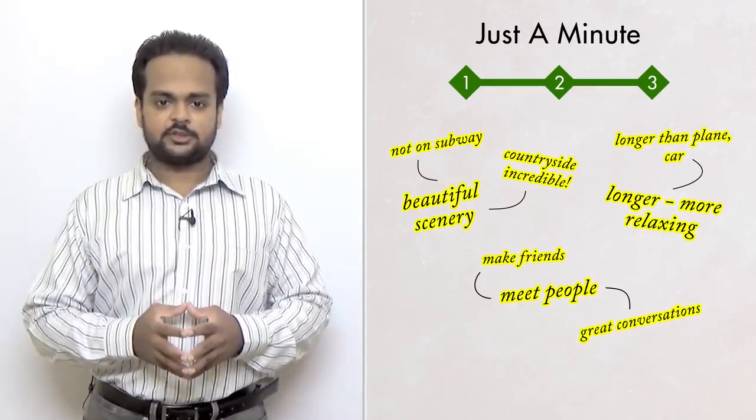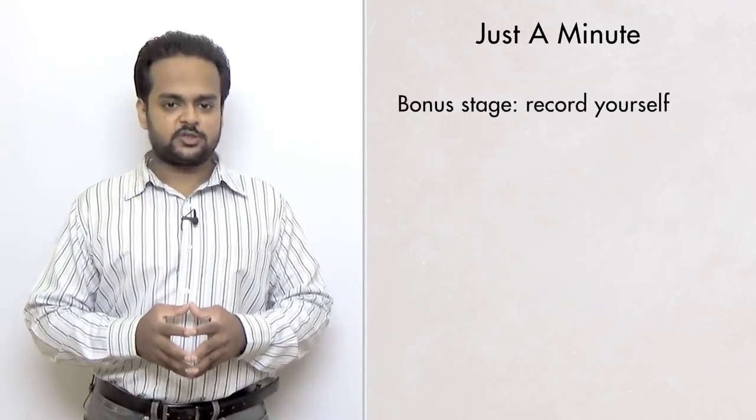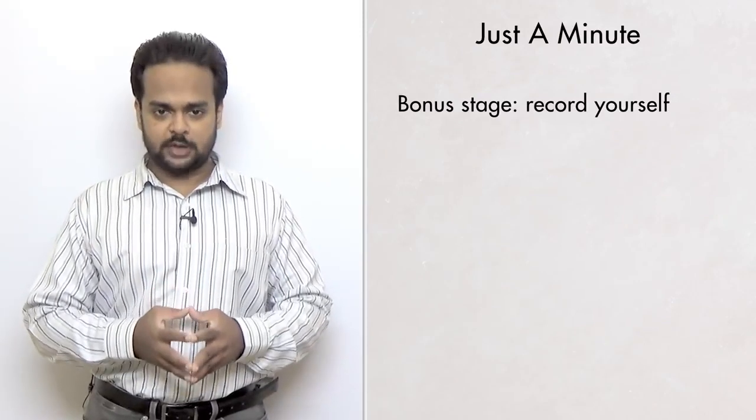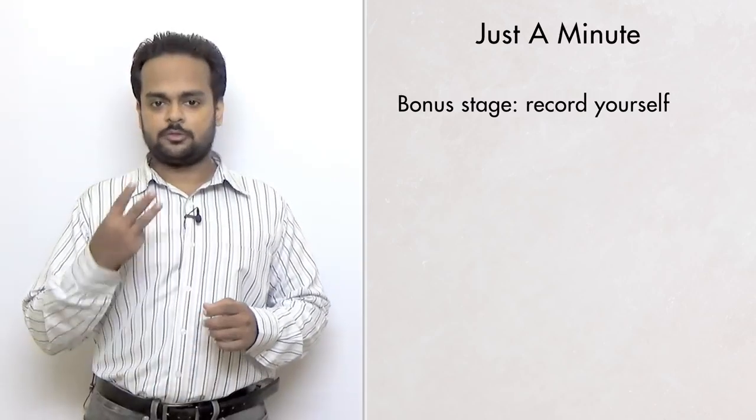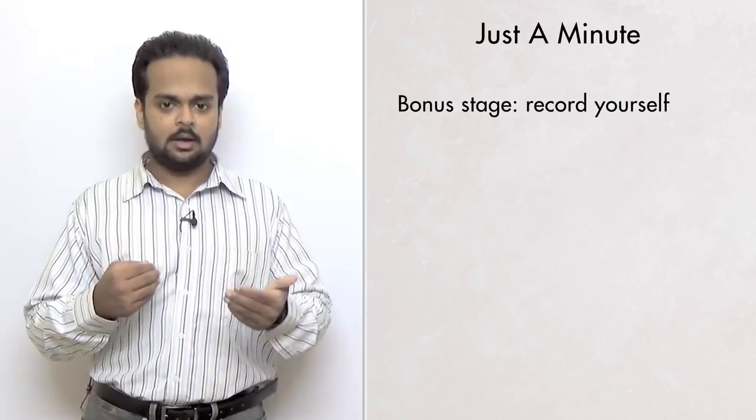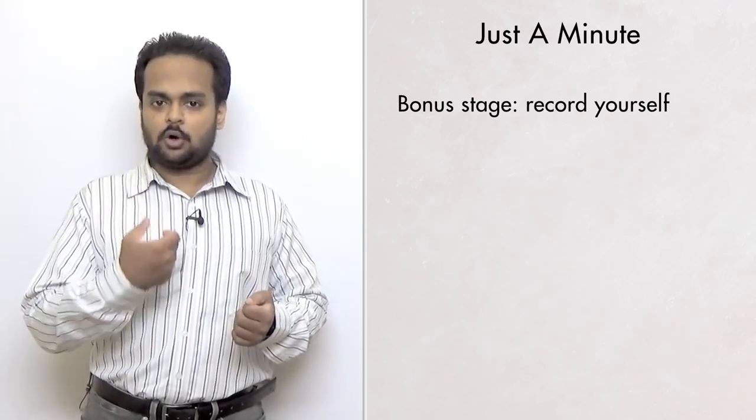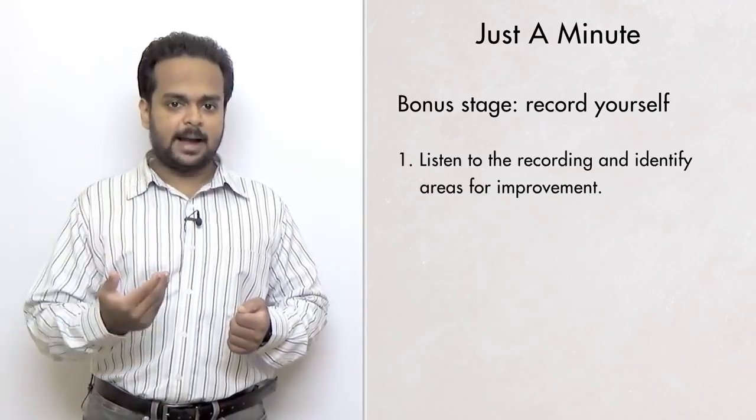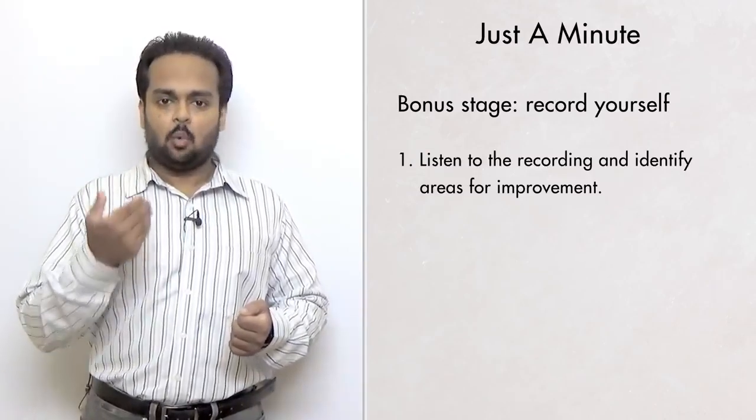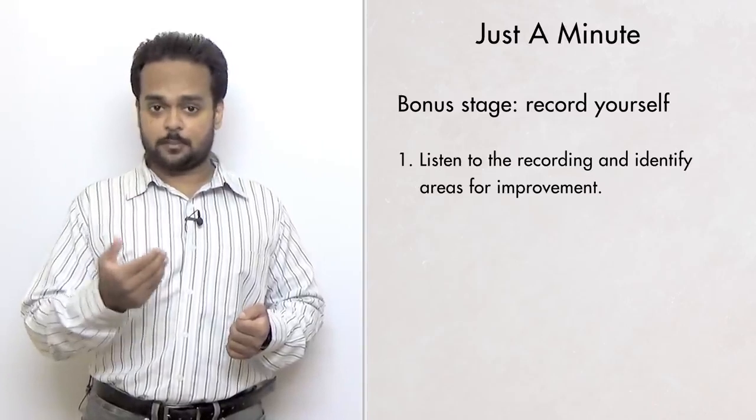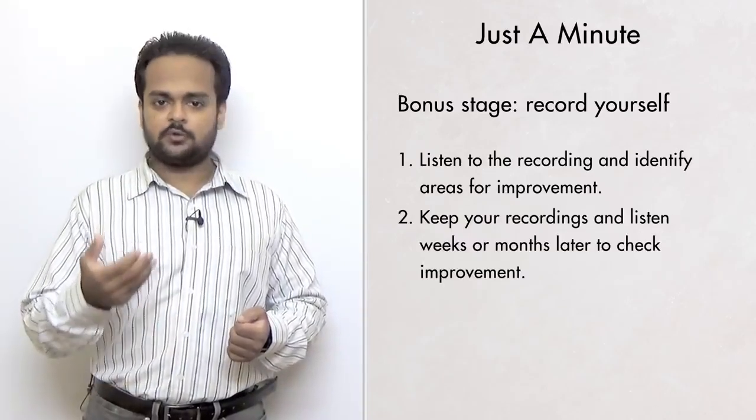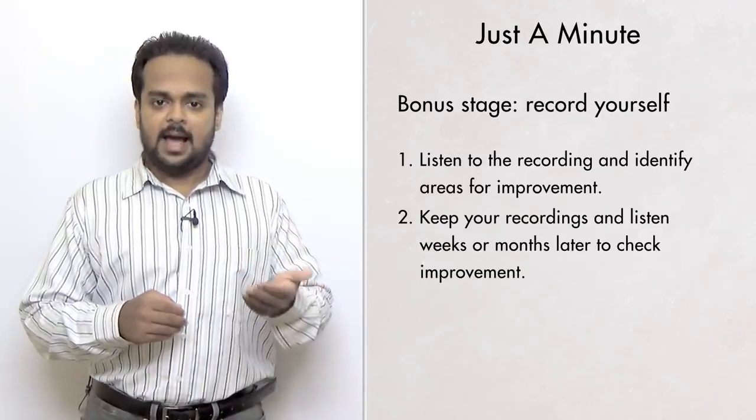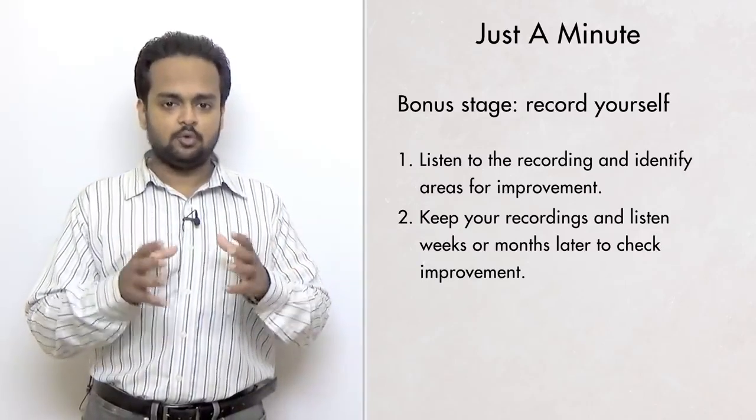Now I know I said that there are three stages to this exercise, but there's a bonus stage if you're really serious about improving your English. That stage is record yourself. Once you have finished speaking for the third time, you can give your speech once again, but this time you speak into your cell phone or a voice recorder. This is fantastic for two reasons. Because first, you can then listen back to the recording and you can identify what areas you need to improve, particularly your pronunciation. But also, if you keep your recordings on your phone or save them to your computer, you can come back to them after a few weeks or a few months and listen to them and see how much you have improved since that time.